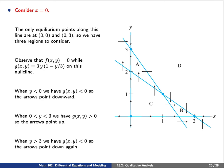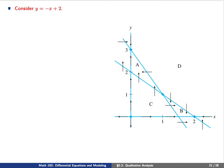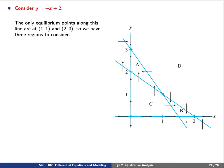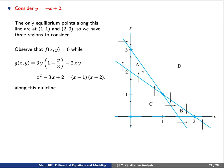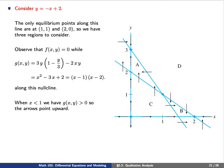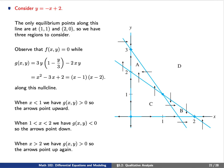Next, consider the x-nullcline y equals negative x plus 2. The two equilibrium points on this line are (1,1) and (2,0). Again, f equals 0, and we plug in y equals negative x plus 2 to find a simple formula for g(x,y). When x is to the left of (1,1), g is positive so arrows point upward. When x is between (1,1) and (2,0), g is negative so arrows point down. When x is to the right of (2,0), g is positive so arrows point upward again.